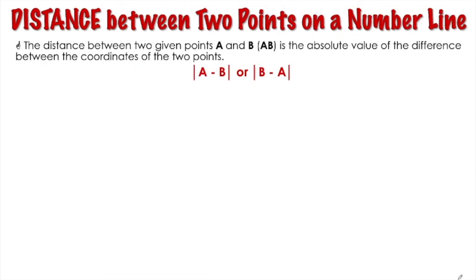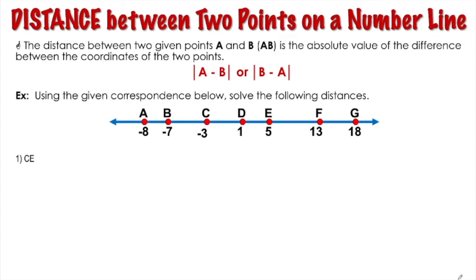Let's use this number line as our example. For the first item, we are solving for the distance from point C to point E. Using the formula, we have the absolute value of C minus E. C is negative 3 minus E is 5, which gives us negative 8. So therefore, the distance between point C and point E is 8 units.